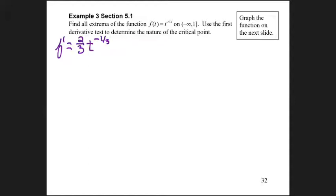When I take the derivative of f of t, I get 2/3 t^(-1/3), which I'm going to rewrite as 2 over 3t^(1/3). Now I'm ready to find my critical numbers.